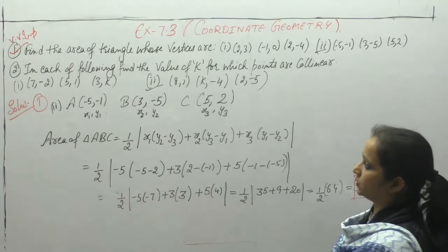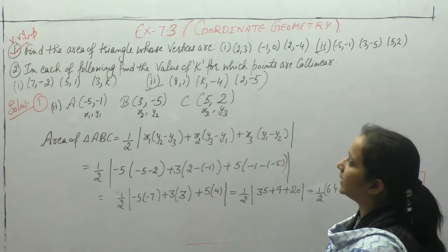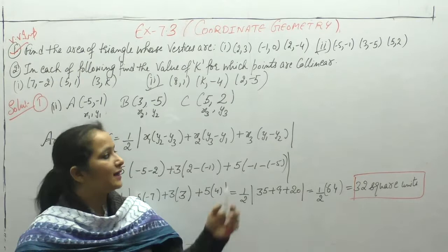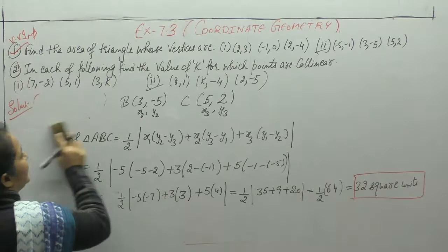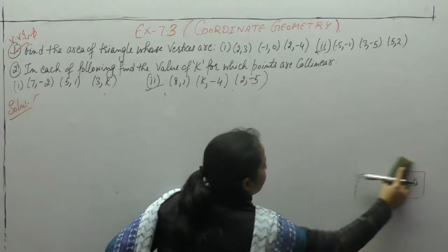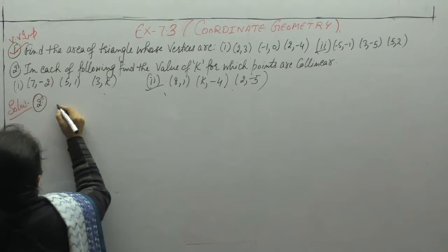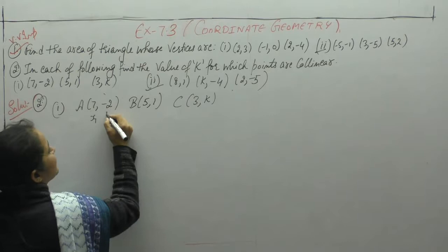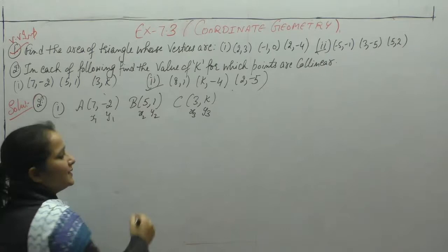Next में collinear points के लिए K की value find करनी है. In each of the following, find the values of K for which the points are collinear. Points are collinear means all points एक ही line में हैं. अगर area से prove करना है, points collinear given हैं, it means area of triangle is 0. Question 2, first part: A(7, -2), B(5, 1), and C(3, K). Coordinates are X1, Y1, X2, Y2, X3, Y3.